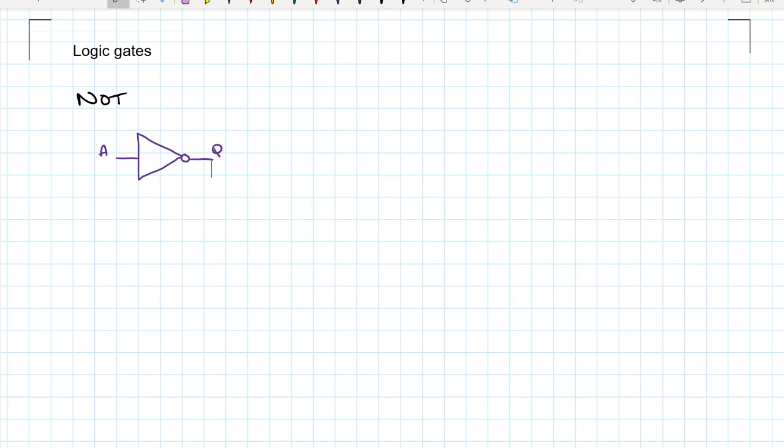So here's our NOT gate. Triangle with a circle on the end. The circle tells us it's classed as an inverter. And Q is not whatever A is, not the logic level what A is. So that helps us do our truth table. We get the opposite logic level to whatever we put in.